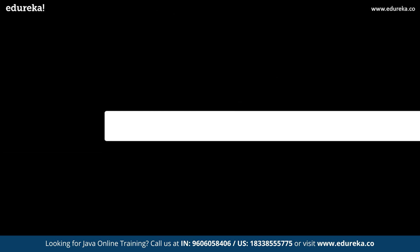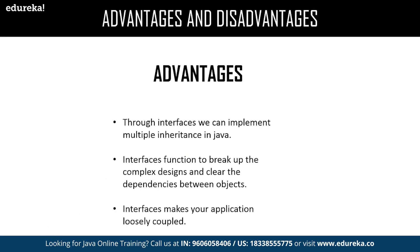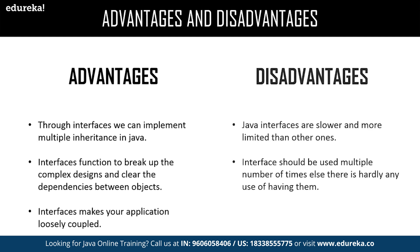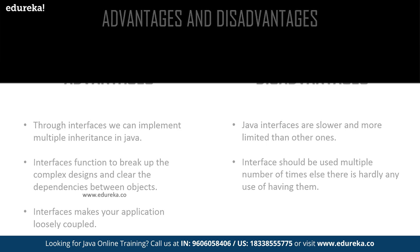Let us get into the major advantages and disadvantages of interface. Advantages: we can achieve multiple inheritance in Java, we can easily break up complexity and enable clear dependency between objects, and we can achieve loosely coupled applications through an interface. Disadvantages: Java interfaces make the application slower compared to competitors like Python which support multiple inheritance natively. Also, once an interface is included in an application, it might be used once in a while or end up being used multiple times at a larger scale.